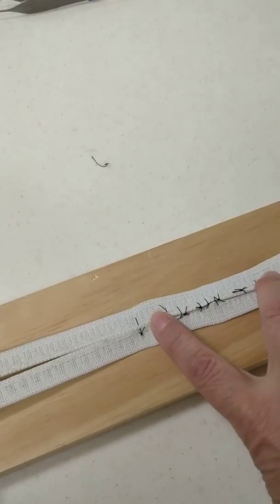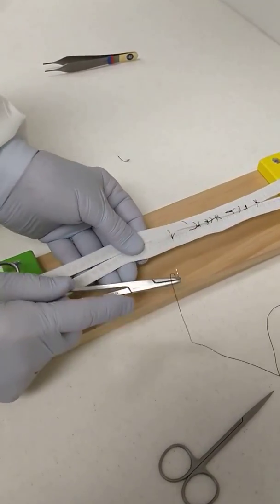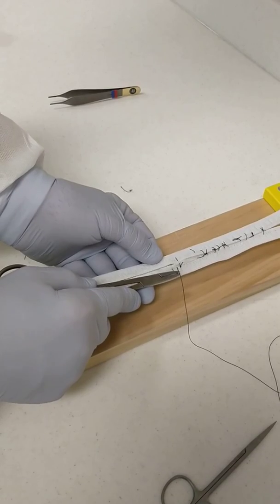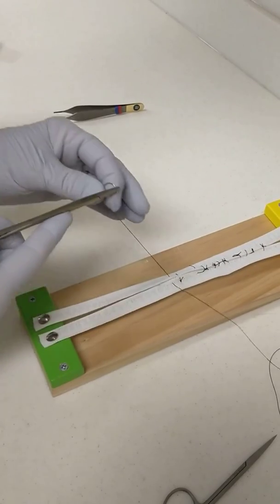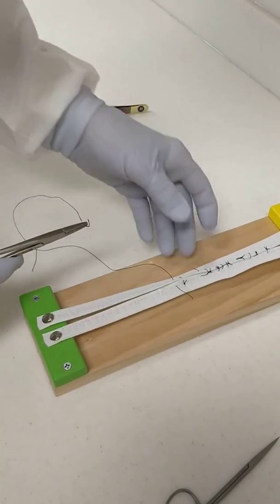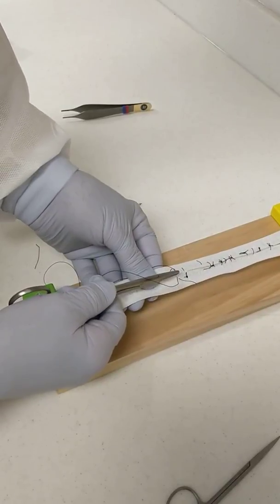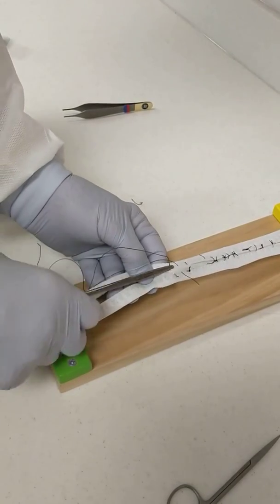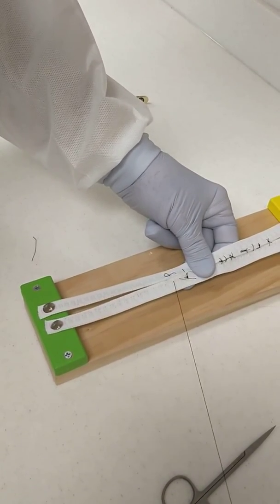The horizontal mattress suture is like a box. You pass the needle through the tissue, just like you do on a simple, and you come down about five millimeters or so, and you pass it back in the opposite direction. You're trying to keep the same amount of tissue between each of those passes.